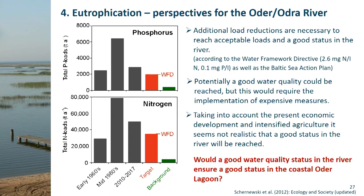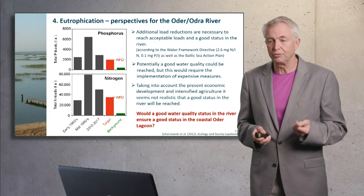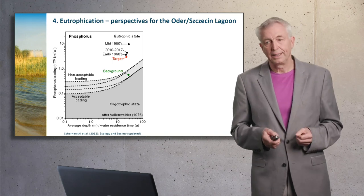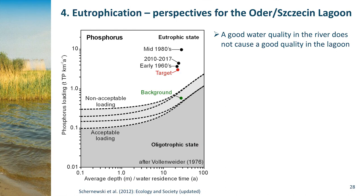The next question is: would a good water quality status in the river ensure a good status in the Oder Lagoon? The grey area in the diagram represents the loads of phosphorus that can enter the lagoon while it stays in a good, oligotrophic or mesotrophic state. We are still facing loads in the eutrophic zone — the dots for 2010 to 2017 are just above the target loads, all in a eutrophic area. This means good water quality in the river does not automatically produce good quality in the lagoon.